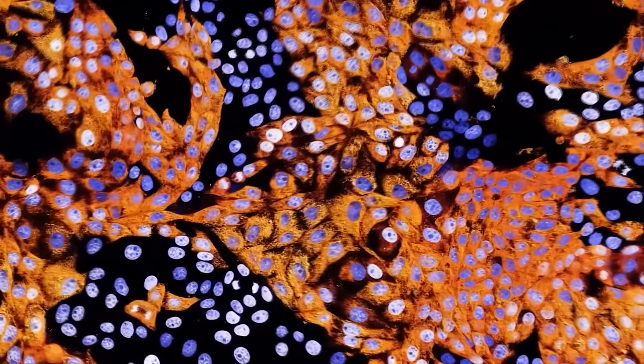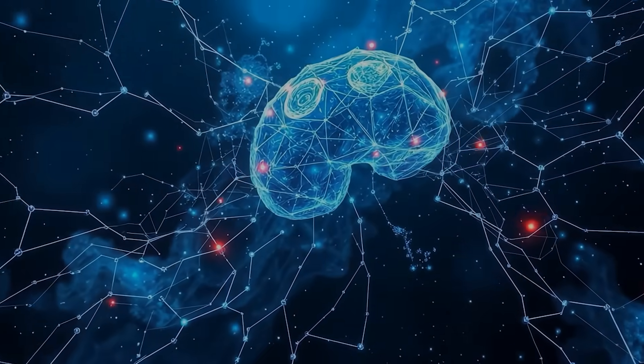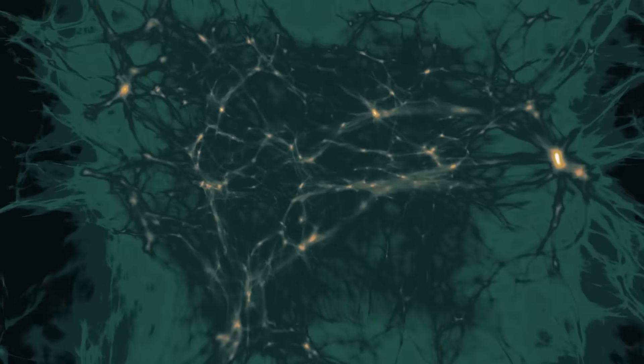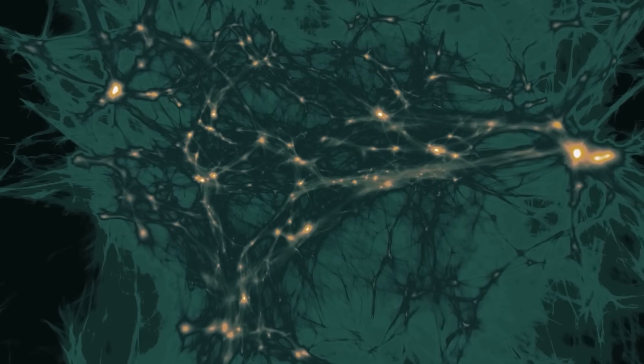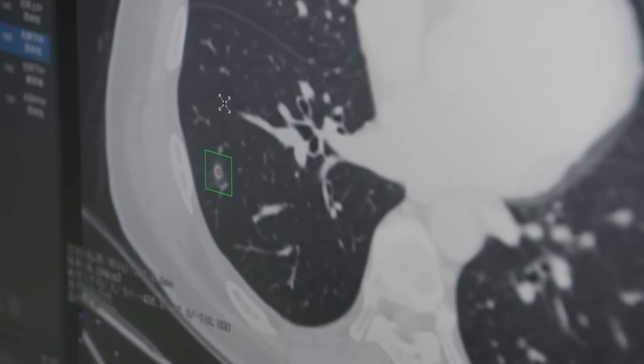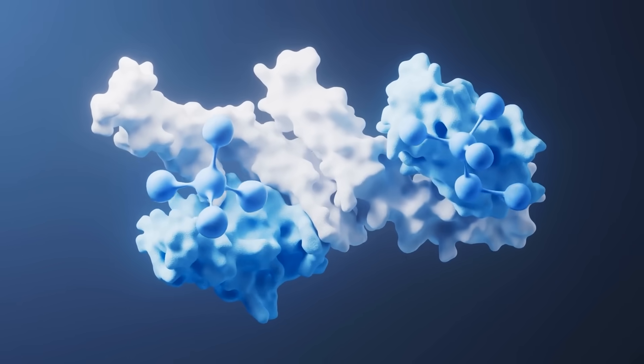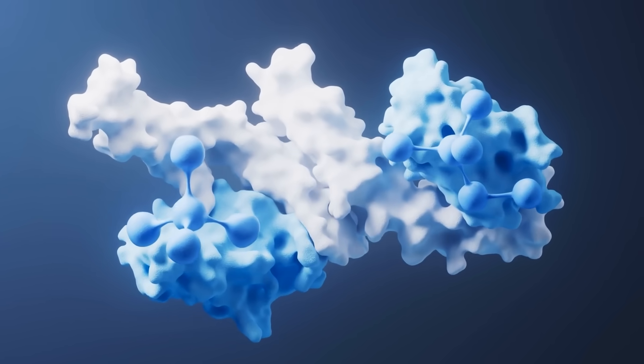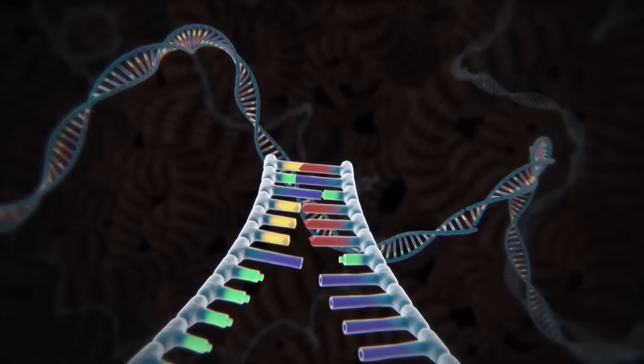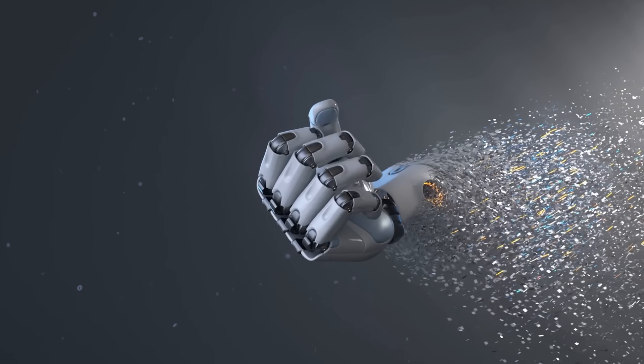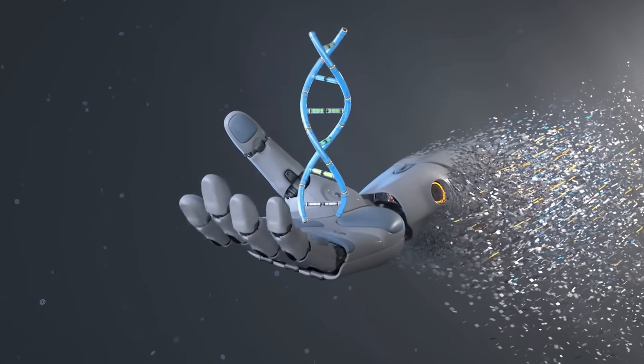But the real game-changer might be how this AI model can explore what researchers often call the genome's dark matter. This term has been borrowed from cosmology to describe the vast stretches of DNA that don't directly code for proteins. Turns out, most cancer mutations lie in those dark regions. So, even though these mutations don't necessarily break a protein, they might alter how genes get switched on or off, contributing to disease in ways we're only beginning to understand. Rabadan's team believes their model can illuminate those unexplored areas by predicting how changes there might affect gene expression.